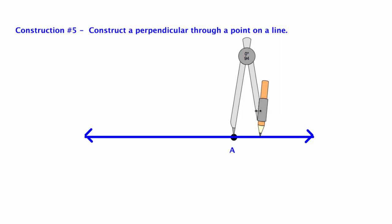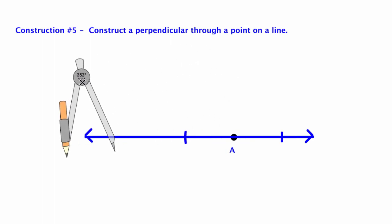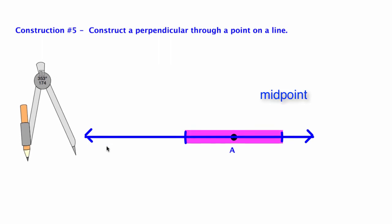To start off, I'm going to put my compass on point A, and I'm going to swing on the left side, and on the right side, a little mark. The main thing is that this mark is the same distance from point A, and so that means that A is now the midpoint of a segment.